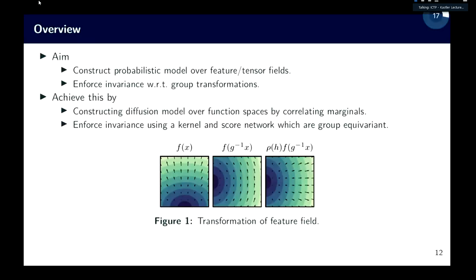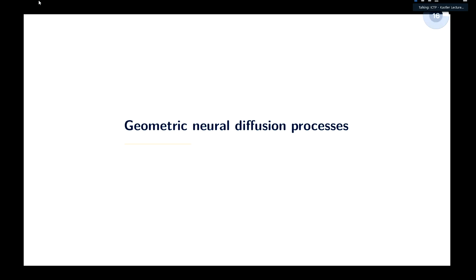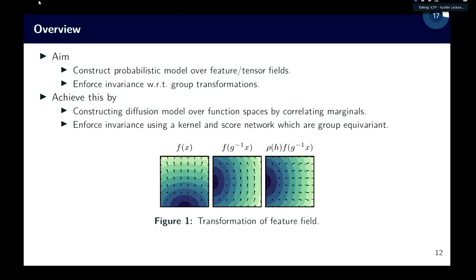Now I'll introduce the main method. Briefly, tensor fields are mappings from an input space to a tensor, and tensors are geometric objects that transform in a particular way when coordinates change — such as under rotation or translation of the frame. We'd like to enforce invariance for such objects with respect to group transformations. We achieve this in two ways: first, by extending diffusion models to function space by correlating the finite marginals; second, by enforcing invariance using a kernel and a score network that are group equivariant.